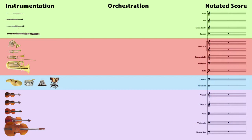First, texture, because that element is so fundamental to the very idea of orchestration. Since our common currency as orchestrators is the score, I've defined this as the vertical element — what is going on at the same time in terms of the cumulative effect of pitches and timbres. Another word for this is orchestral color.